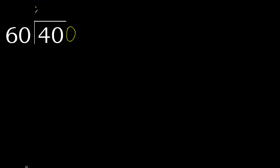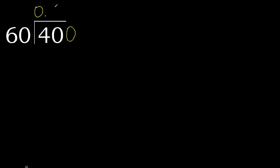Always complete with 0. Here: 0 point. 400 is not less, therefore with 400, 60 multiplied by which number is nearest to 400 but not greater. 60 multiplied by 7 is greater. Multiply by 6 is not greater. Subtract — 40.